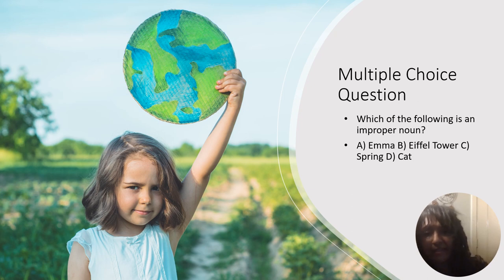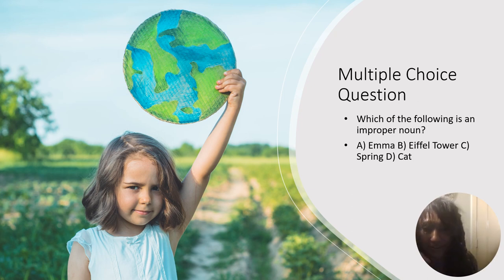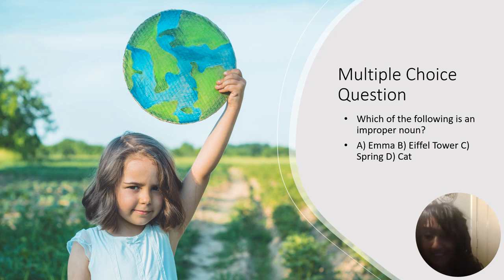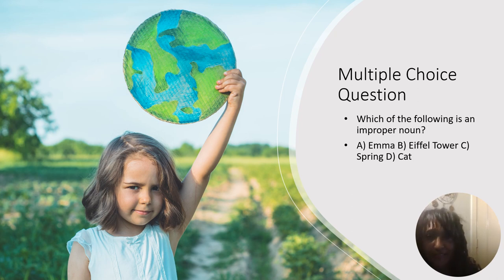So let's take a look at this multiple choice question to help you out as we go through this lesson. Which of the following is an improper noun? A. Emma. B. Eiffel Tower. C. Spring. D. Cat. If you said D, you are correct.